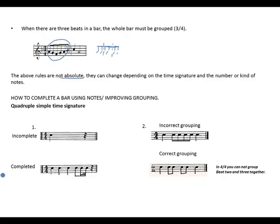Let's look at how to complete a bar using notes or improve a grouping. The following is a quadruple — remember, quadruple is the same as 4/4 — simple time signature. We've been given an incomplete bar. The first beat is a crochet, and the last beat is a silent beat — a demisemiquaver rest. Beat 1 is a crochet, beat 2 can also be a crochet, on beat 3 we also used a crochet.